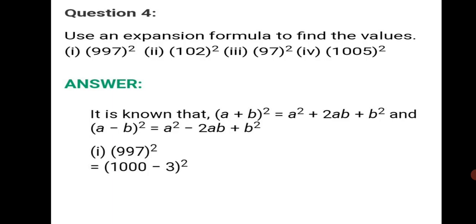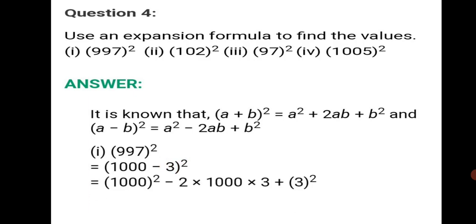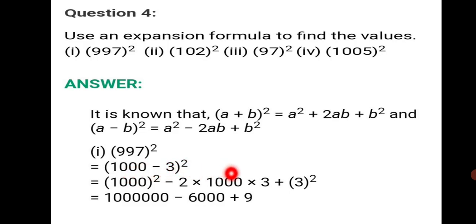So 997² = (1000 − 3)². Applying (a−b)²: 1000² − 2×1000×3 + 3² = 10,00,000 − 6000 + 9. Calculating: 10,00,000 + 9 = 10,00,009; minus 6000 gives 9,94,009 as the final answer.